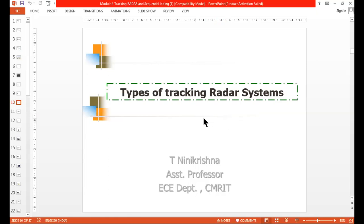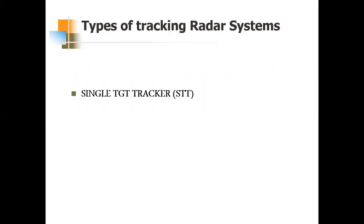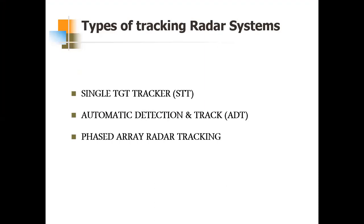In this video, I will explain the types of tracking radar systems. There are four types. The first is Single Target Tracker (STT), the second is Automatic Detection and Track (ADT), the third is Phased Array Radar Tracking, and the fourth is Track While Scan (TWS).